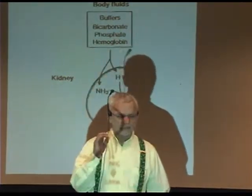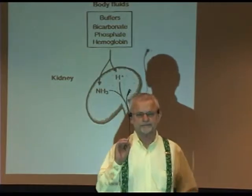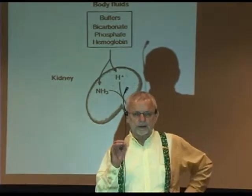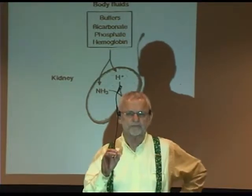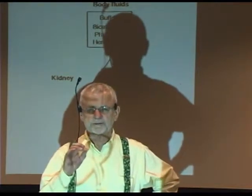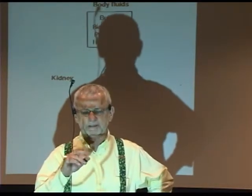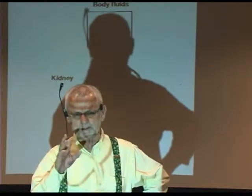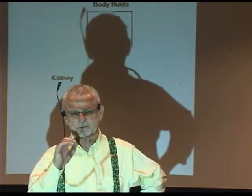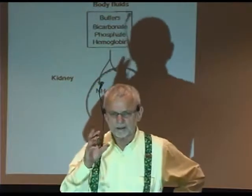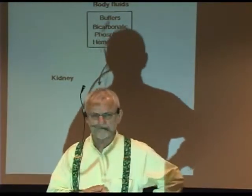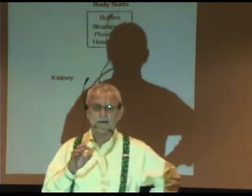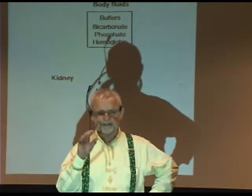We talked about the lungs and how they could regulate pH — how you could have respiratory compensation. It can be alkalotic or it can be acidic. You can make the blood more acidic or more alkalotic by changing the rate and the depth of your breath. But that doesn't work over the long haul. That can help compensate, and that's what it is — compensation.